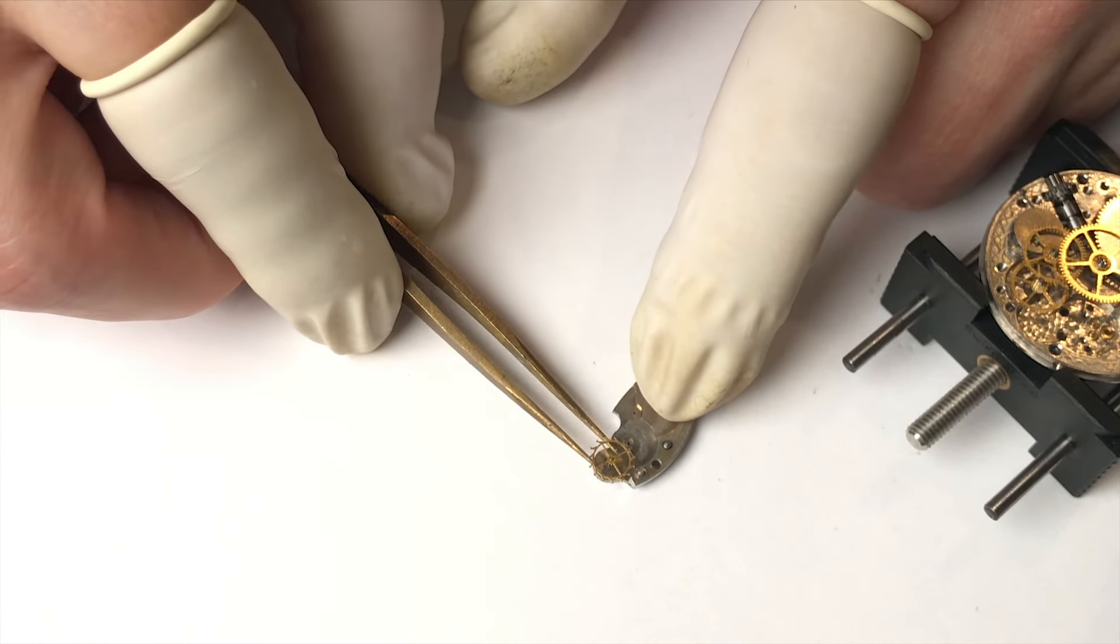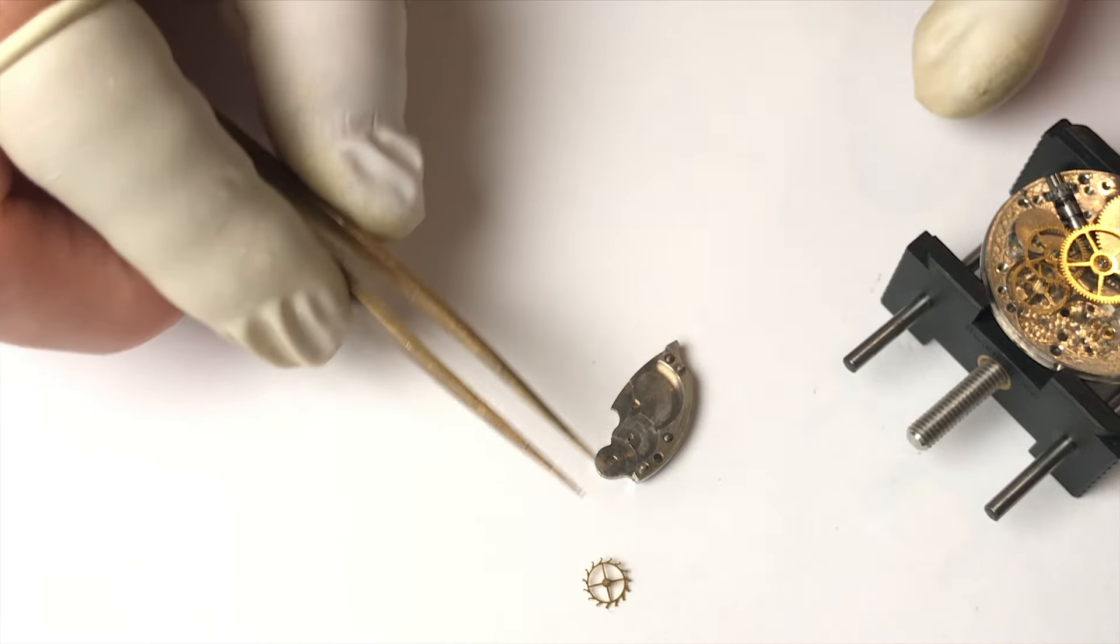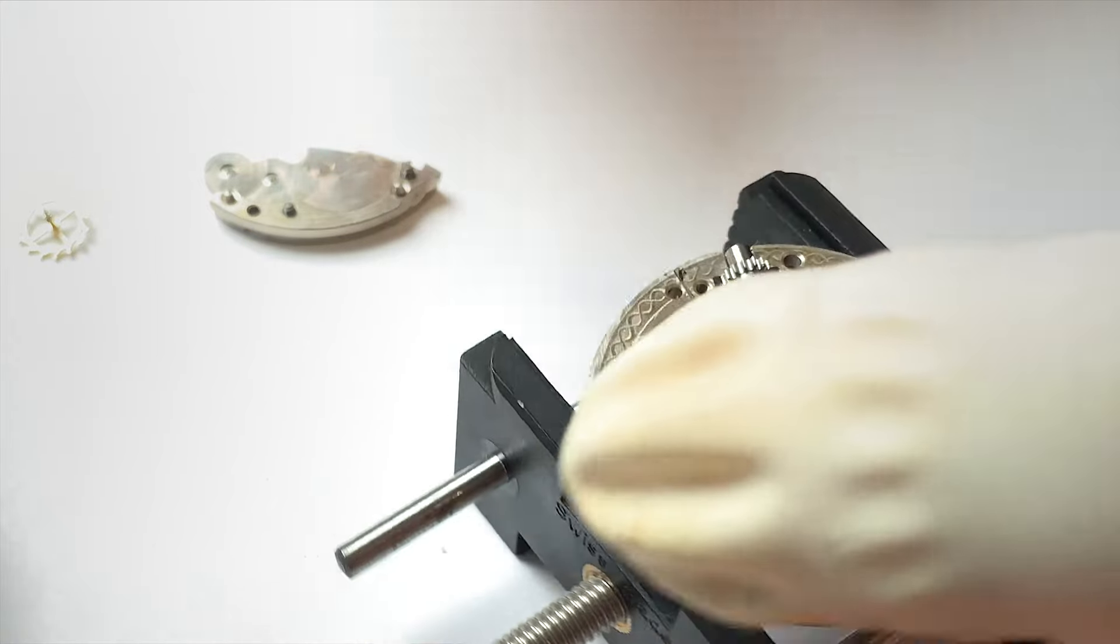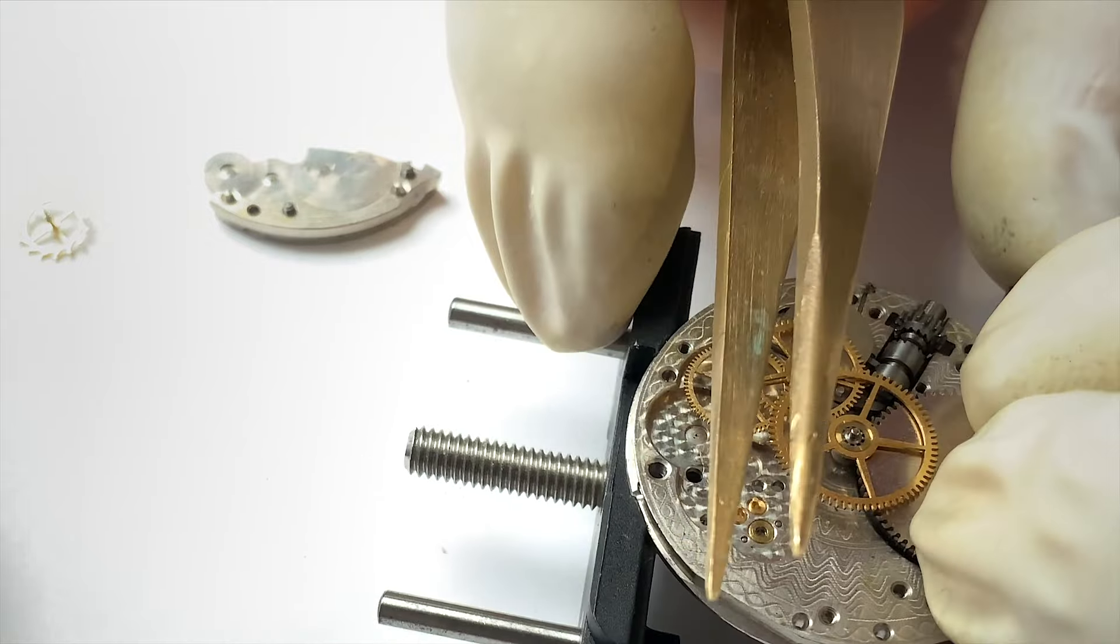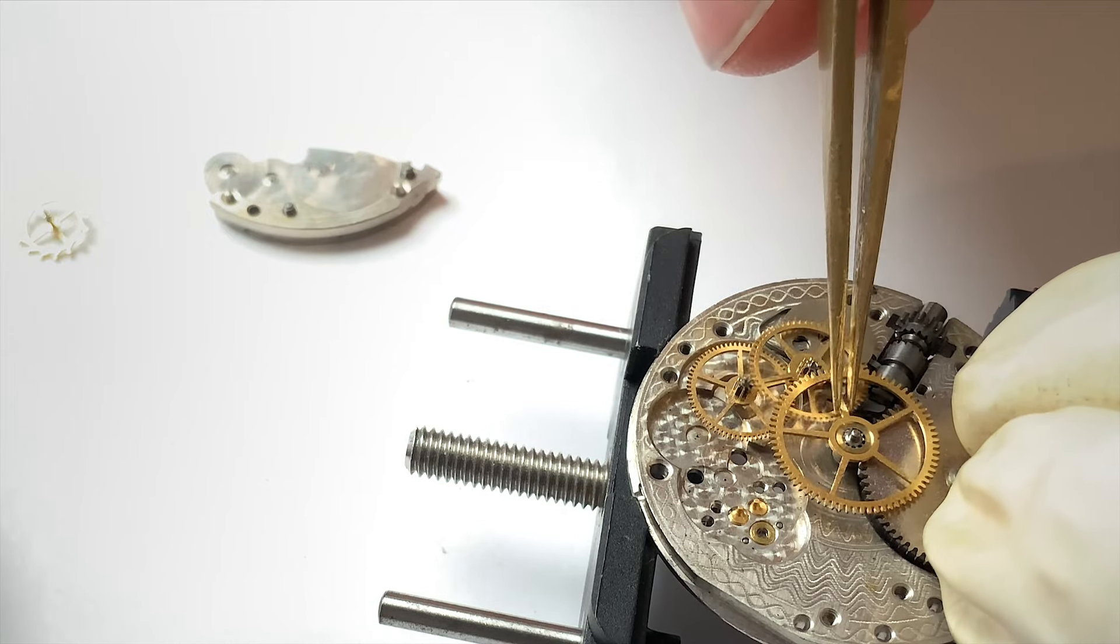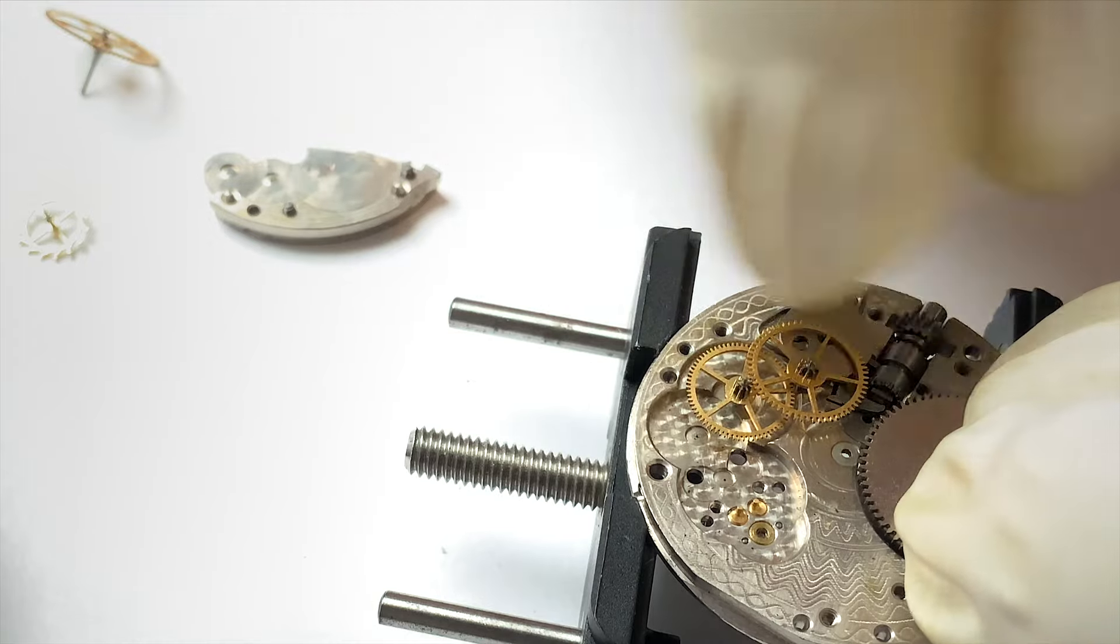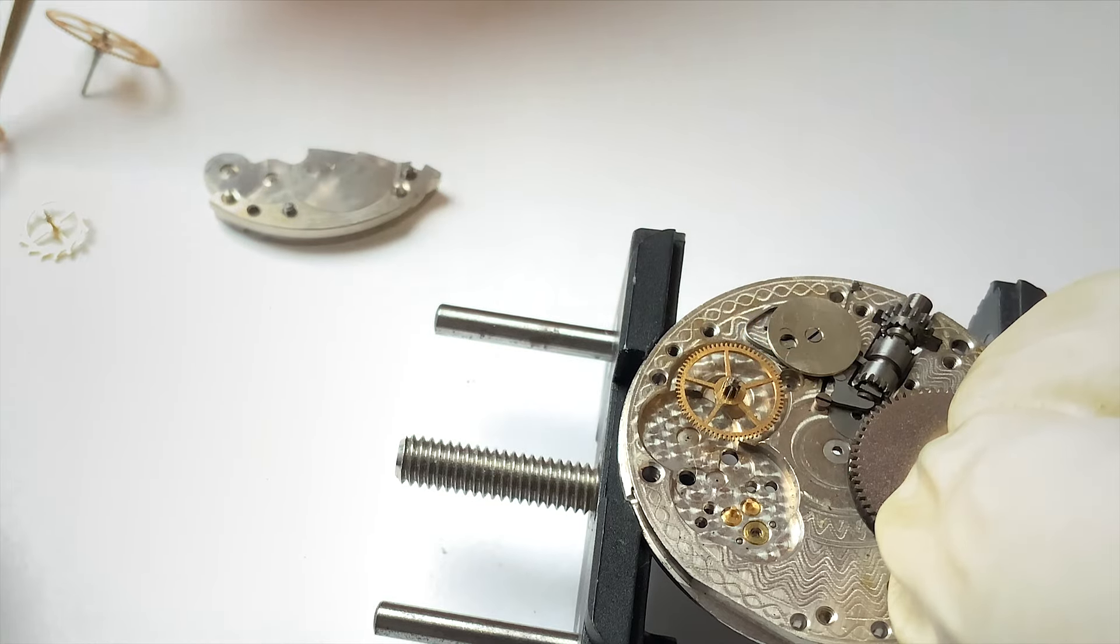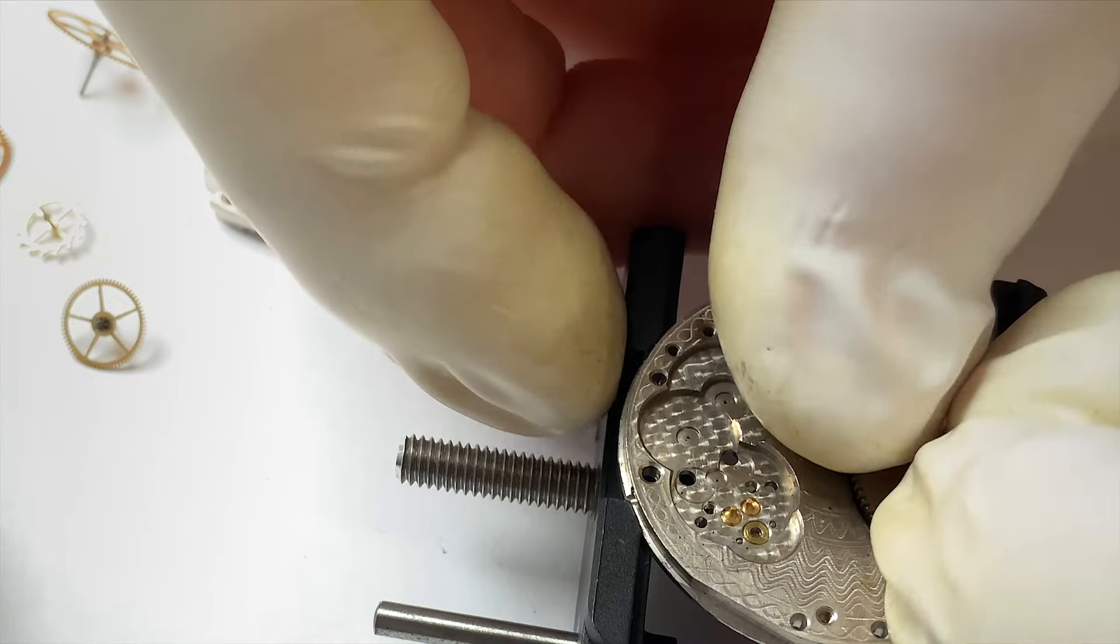Wow, that escape wheel is practically glued on there. I'm surprised we got any tick at all earlier. Okay, I'm noticing something really weird here. There's tension from the spring still, so this thing can go flying at any minute. So I'm going to have to take the rest of this apart while holding the barrel in place. So it's the center wheel. Wow, this is really hard to get a grip on this. Our third wheel. Our fourth wheel.